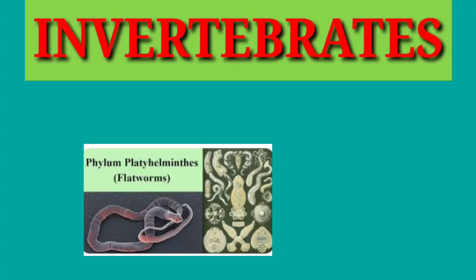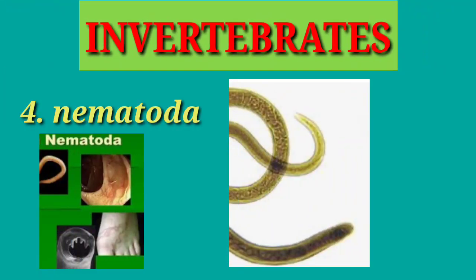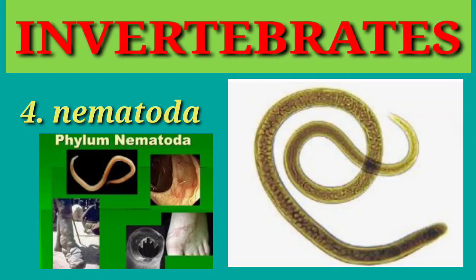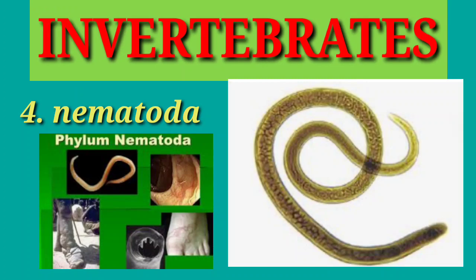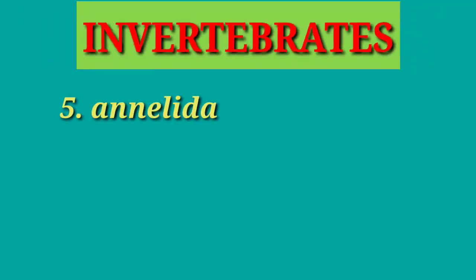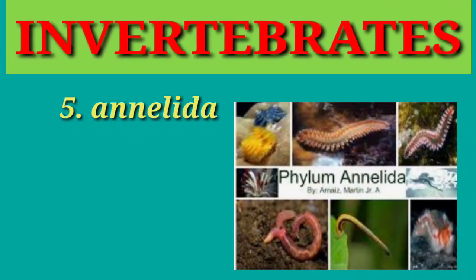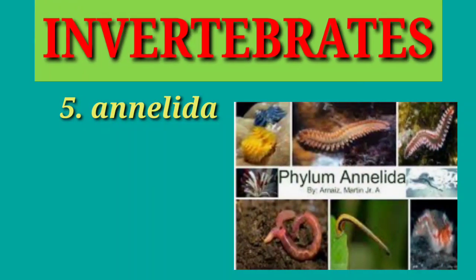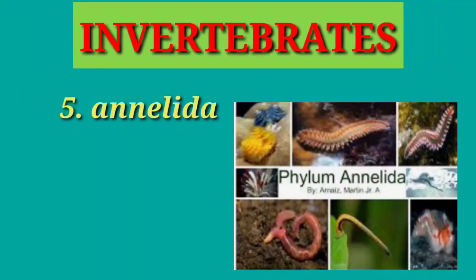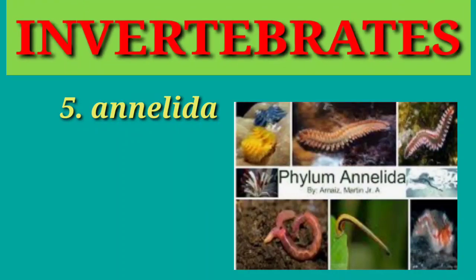Another group is the nematoda. This group is composed of worm-like animals whose bodies are unsegmented. It includes the rootworm and filaria. Number five is the annelida. Annelids have segmented bodies and live mostly on land. The earthworm, which helps farmers make the soil fertile, belongs to this group. The leech, which sucks blood, is also an annelid.